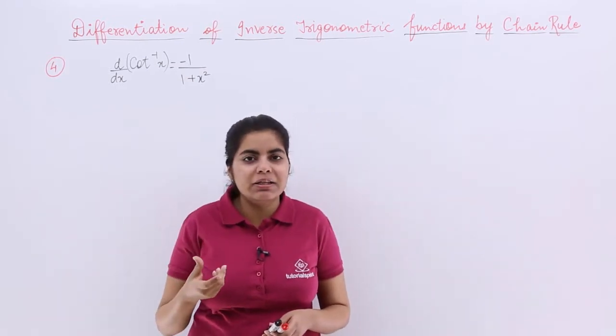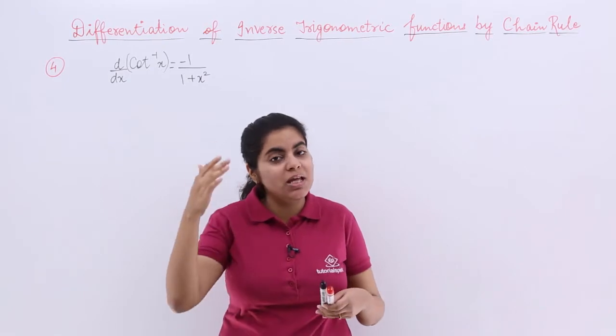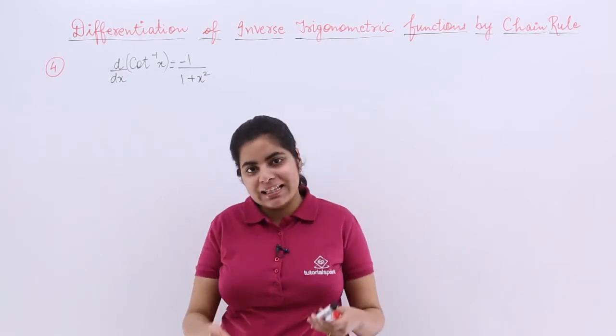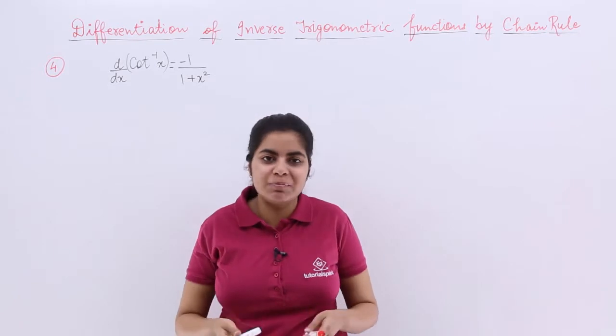Now remember that the differentiation of tan inverse x with respect to x was 1 upon 1 plus x square. This time the only minor change is the negative sign is placed.